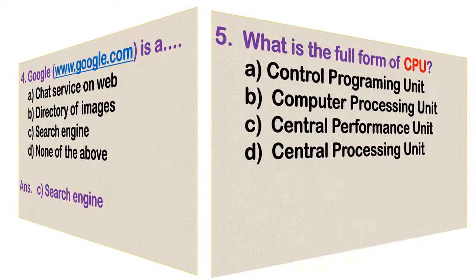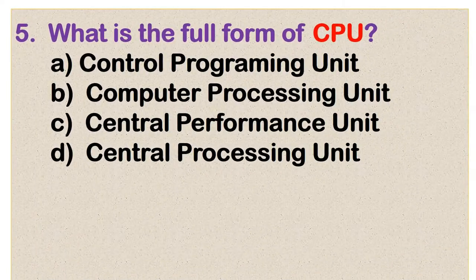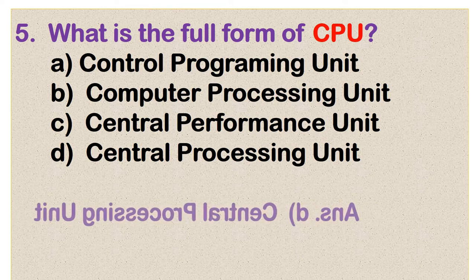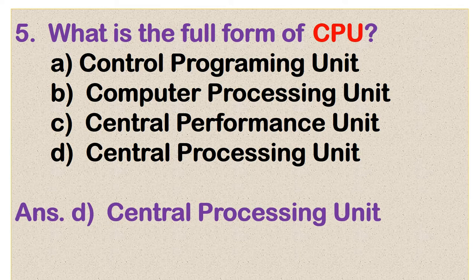What is the full form of CPU? Options are: central programming unit, computer processing unit, central performance unit, and central processing unit. Option D is the correct answer: central processing unit.